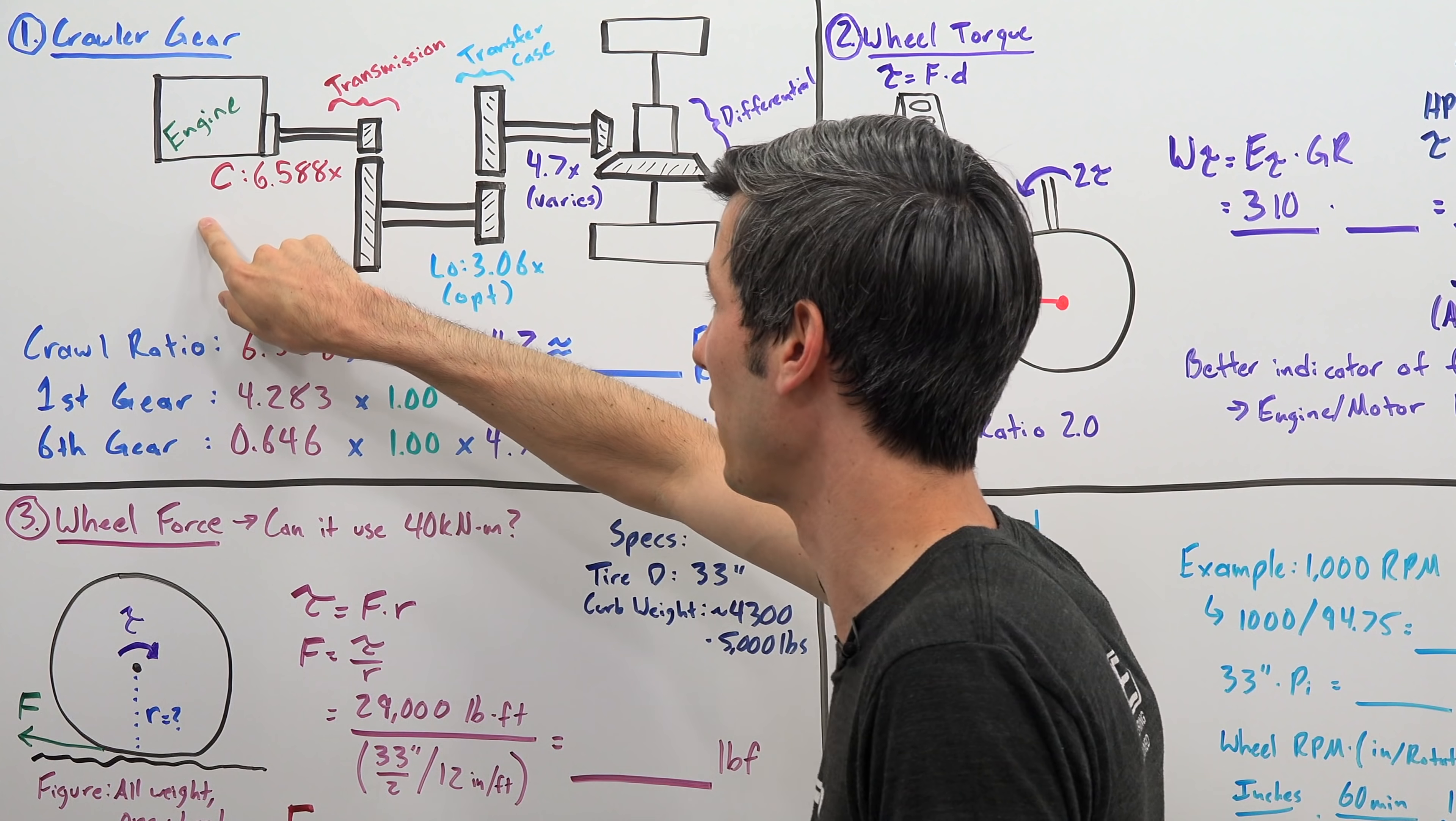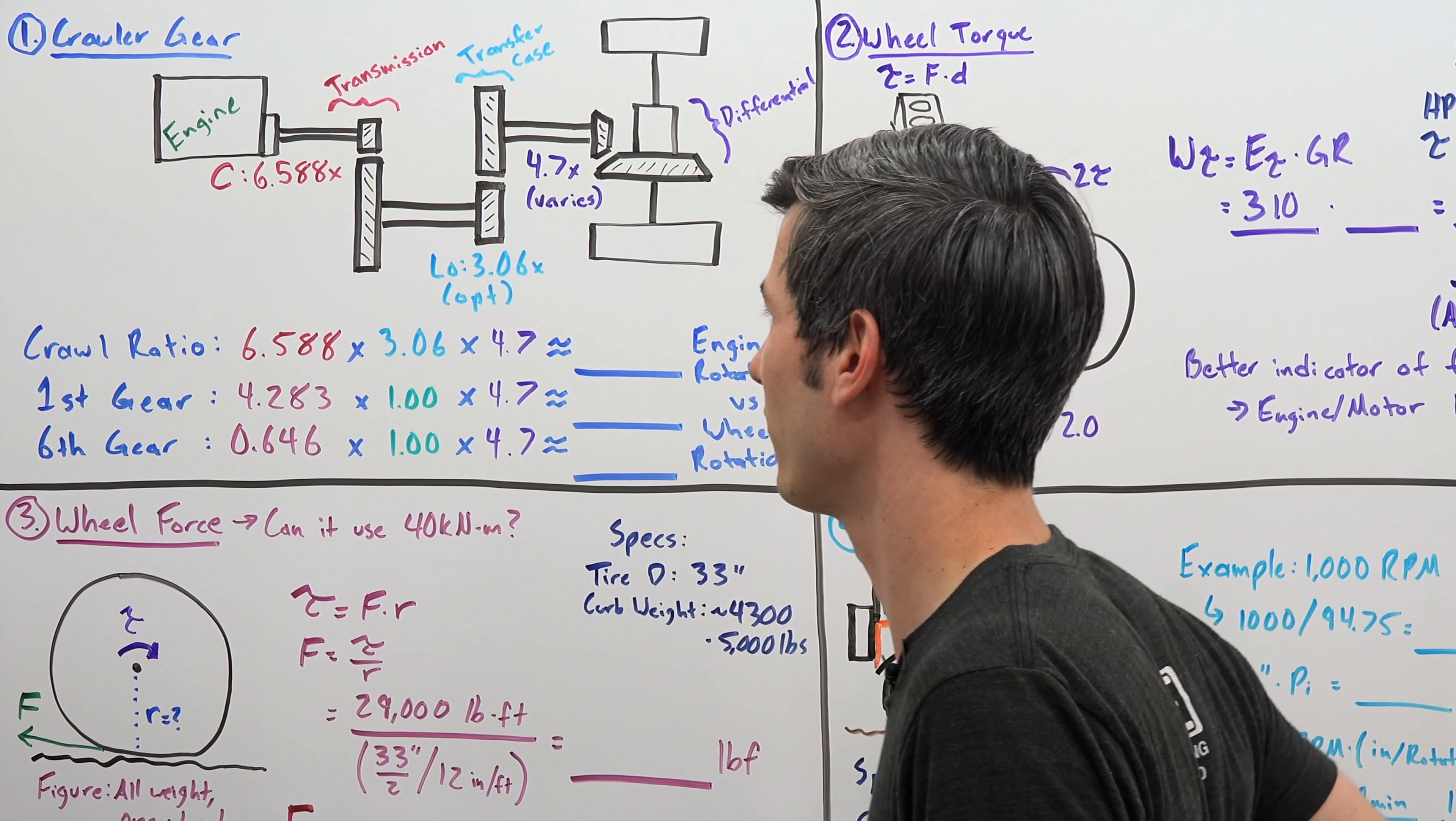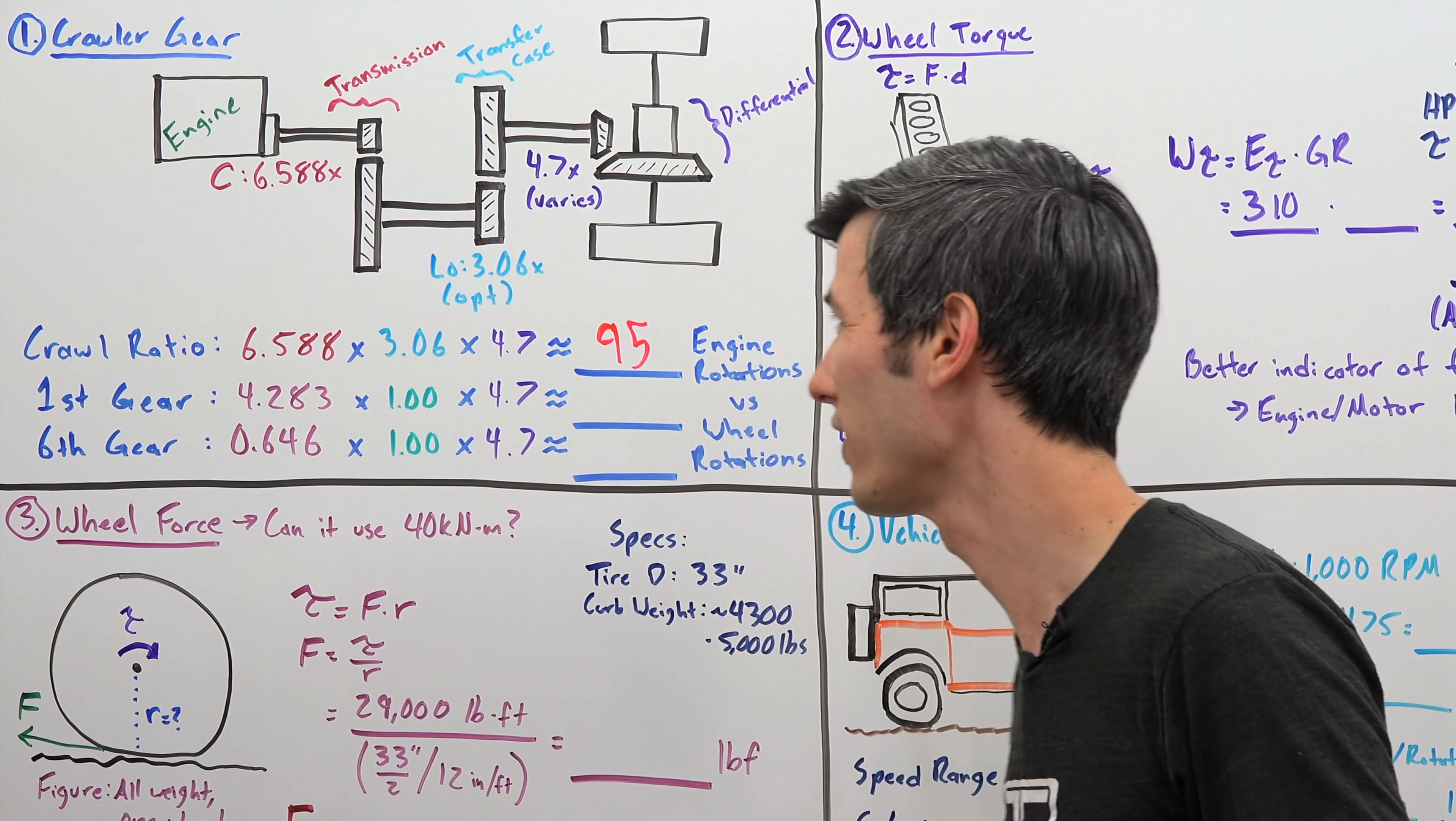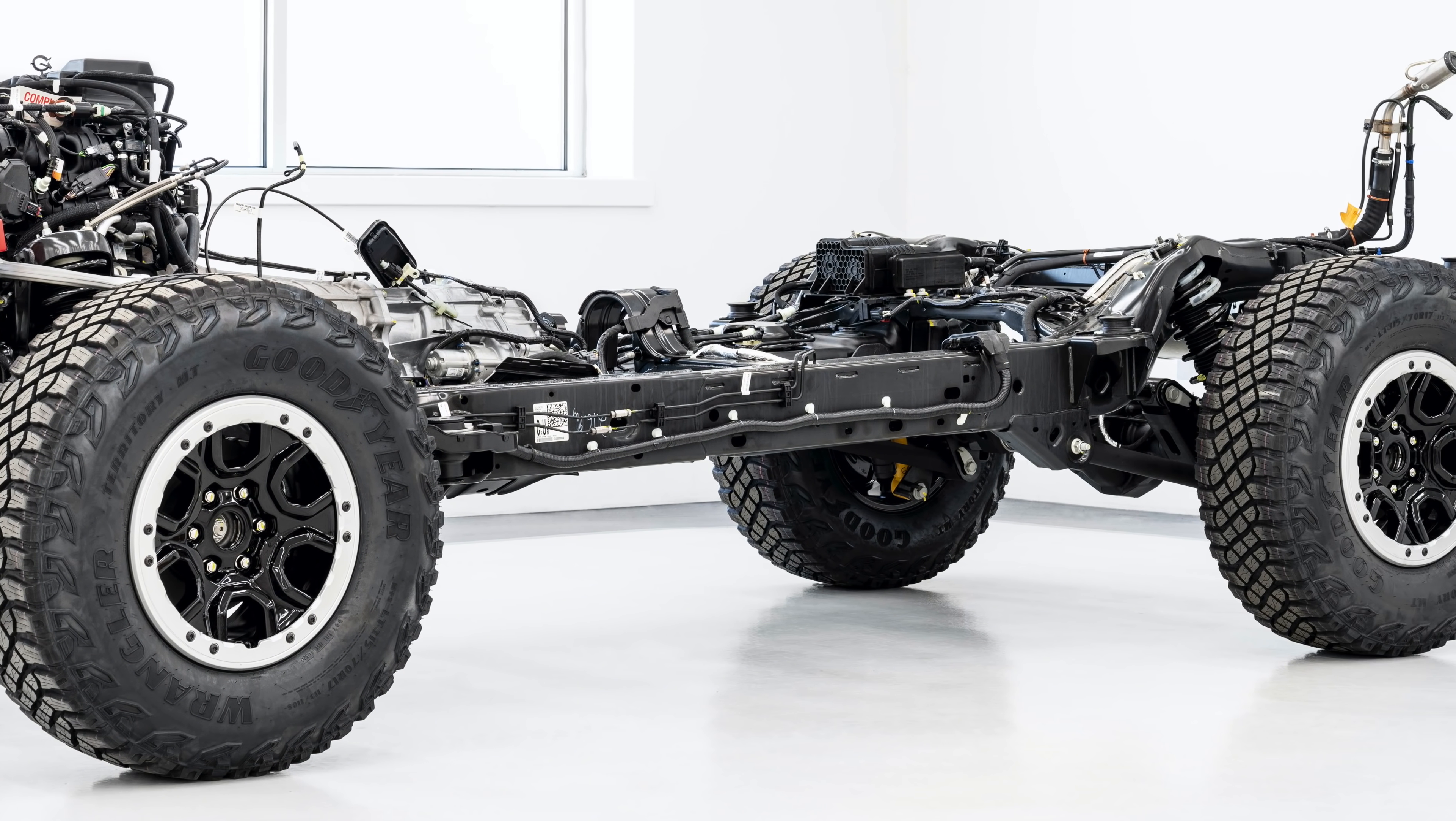So what's happening is your engine speed is being reduced every step of the way by the time it gets to the wheels. So to figure out how much faster your engine speed versus your wheel speed is, you simply multiply these numbers across. So 6.588 times 3.06 times 4.7, and that gives you 95, actually 94.75 if you want to get a little bit more accurate, but what that means is for every 95 rotations of that engine, your wheel rotates once.